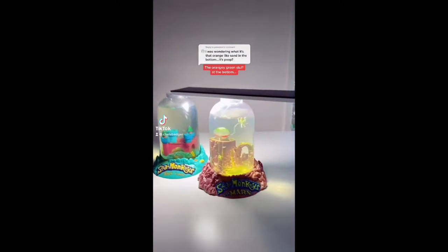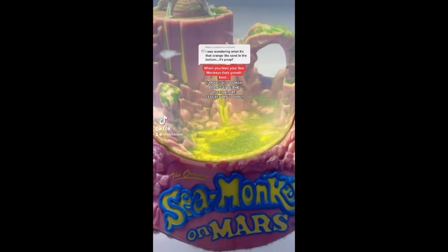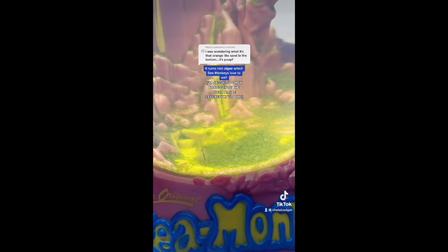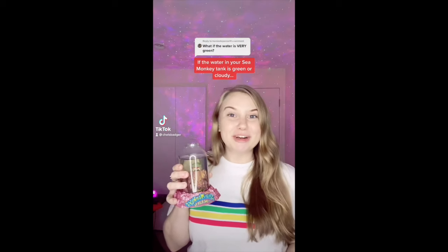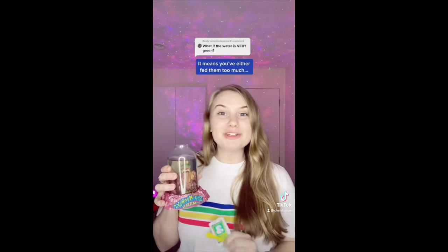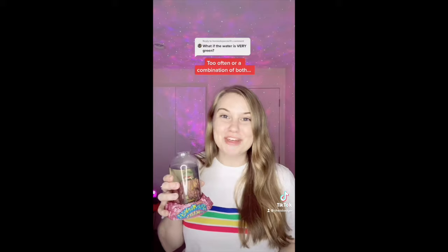The orangey green stuff at the bottom of your tank is algae. When you feed your sea monkeys their grow food it turns into algae which sea monkeys love to eat. If the water in your sea monkey tank is green or cloudy it means you've either fed them too much, too often, or a combination of both. The best thing you can do in that situation is to stop feeding them altogether until the water naturally clears up.